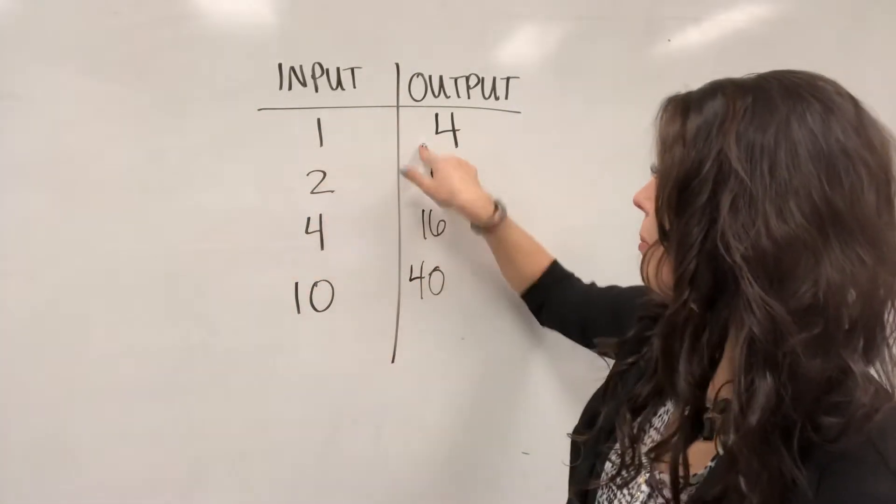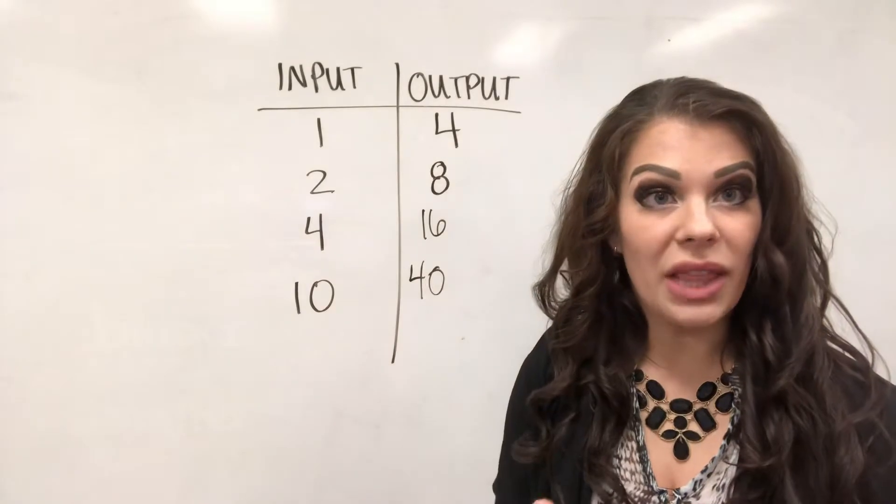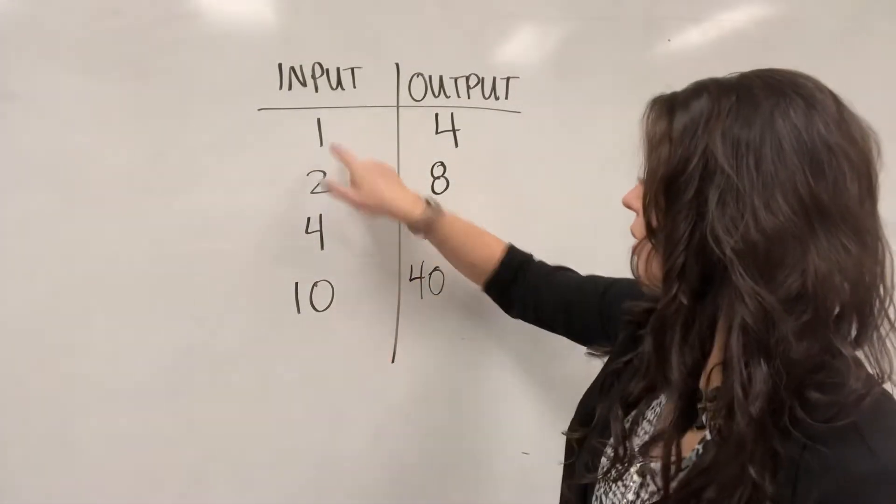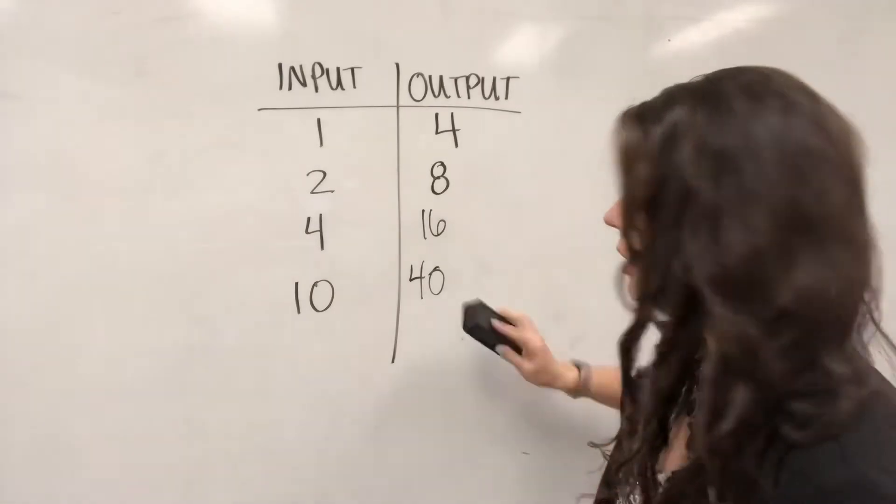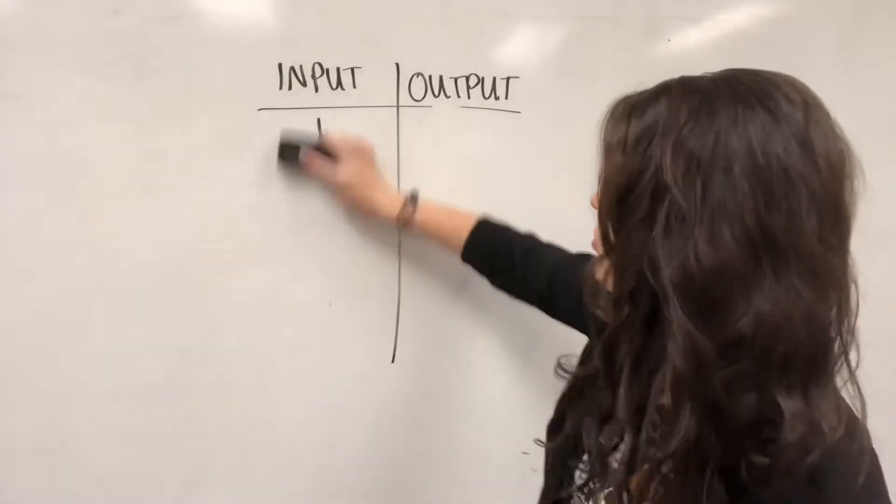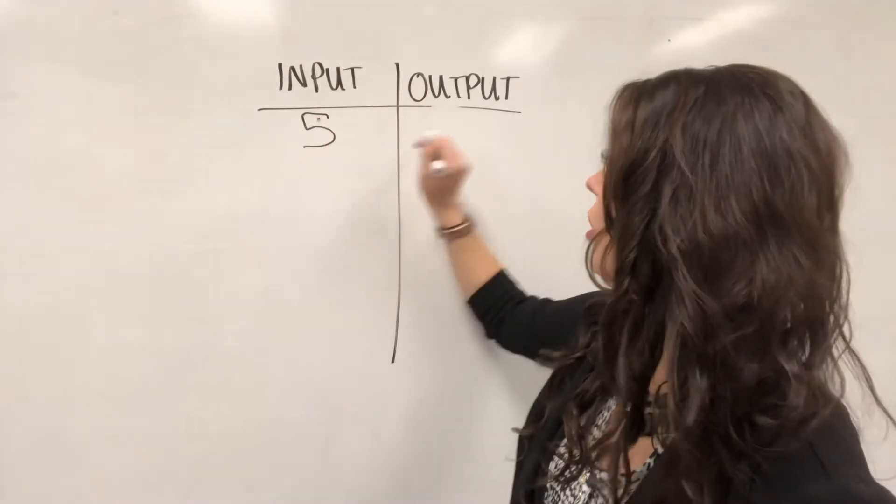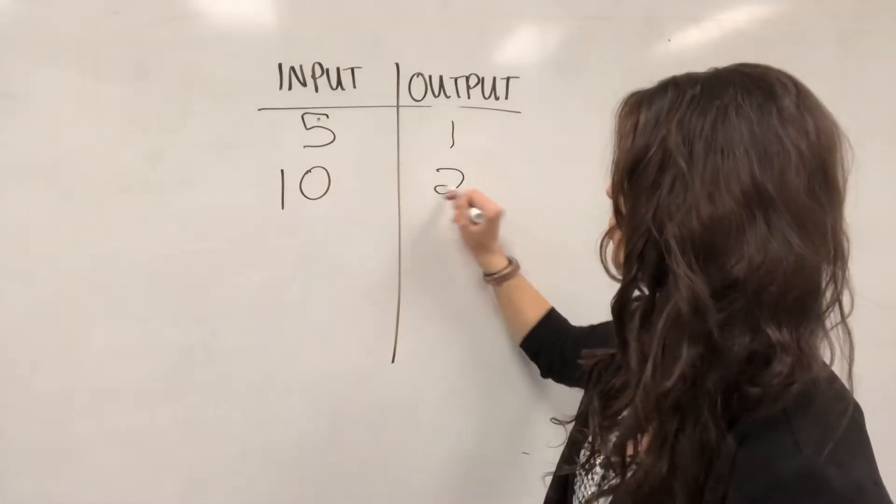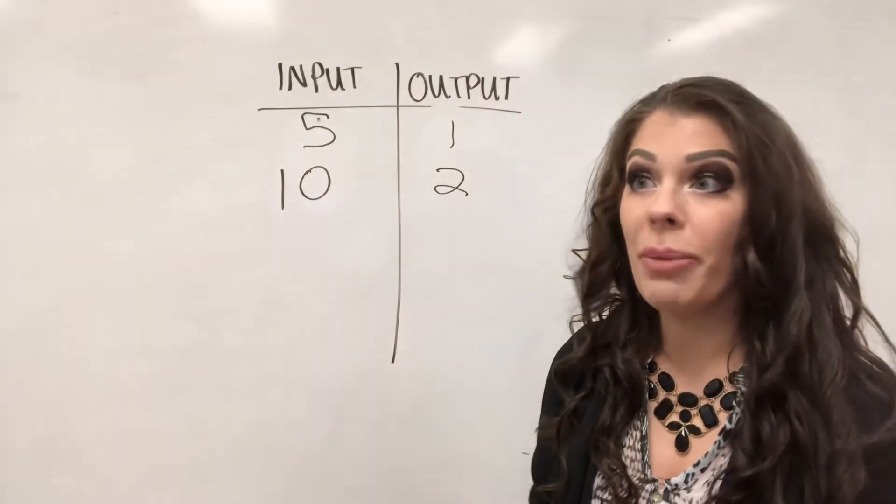If my input is getting smaller, just say I had 5 candies are in one package, 10 candies are in two packages. How many packages do I need in order to have 20 candies? How many packages do I need in order to have 25?